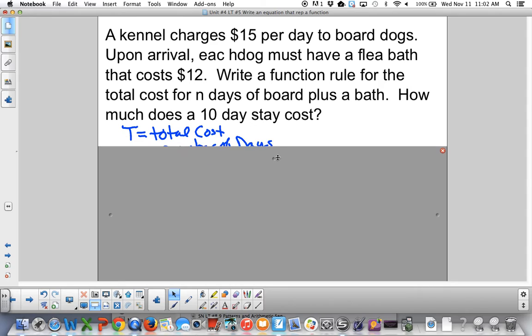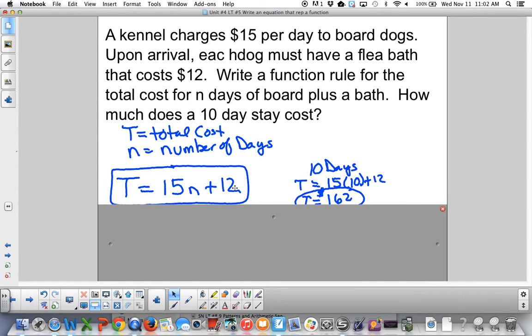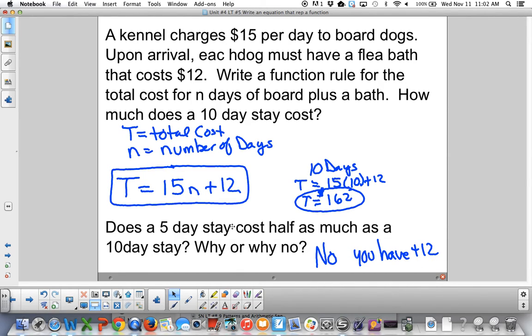$15 per day to board the dogs. Then we have to have a flea bath for $12. So we have total cost and the number of days. Our constant is 12 because it will cost $12 for the flea bath. All dogs need to have that flea bath. Then it's $15 per day. So 15n plus 12 is T. For 10 days I plug in 10 and I get 162. Will 5 days cost half as much as 10 days? No. Because of this plus 12, it's a constant. Because of that.